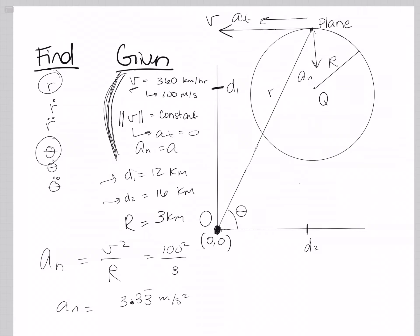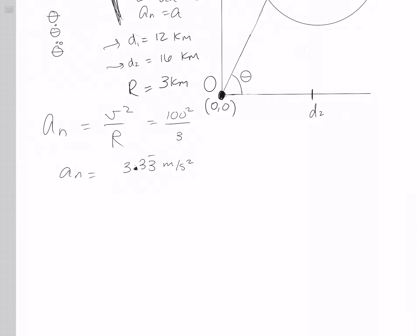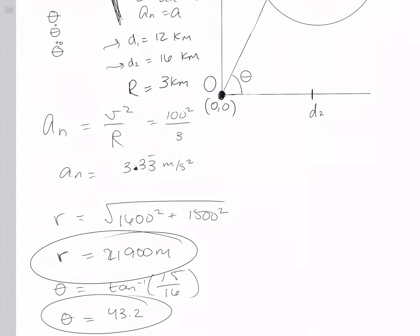And we can also solve for r and theta here, because they've given us d1 and d2. Because d1 and d2 are perpendicular, we can use Pythagorean's theorem to plug in the values, and we get 21,900 meters. Then theta can be found using tangent, 15 over 16, and that is 43.2 degrees. So we've already solved part of the problem.